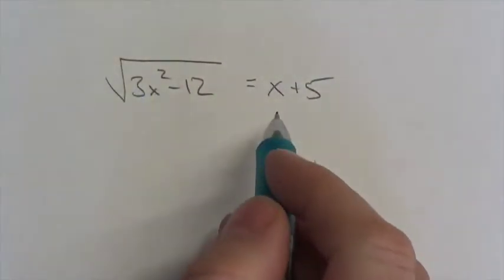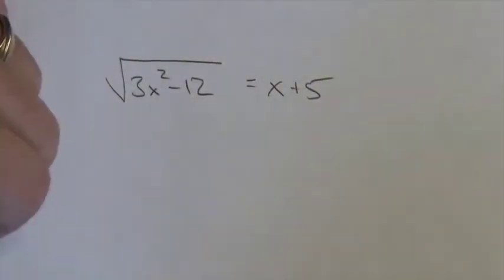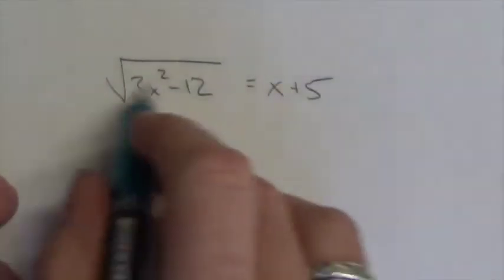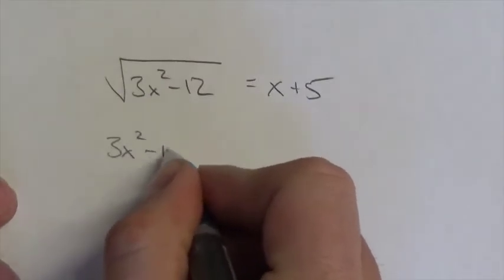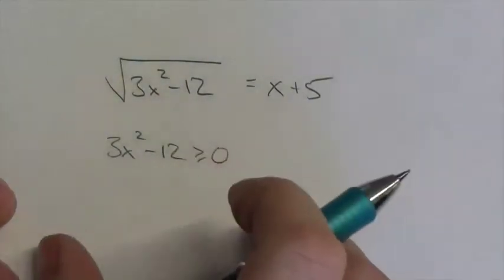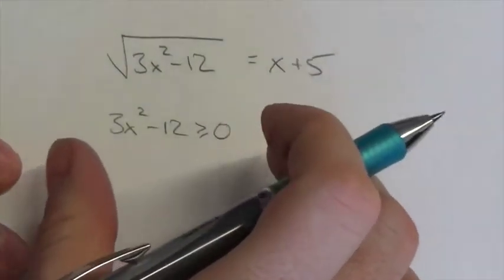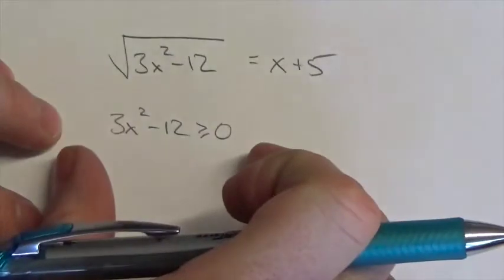Now this one's a little different than what we've done before because of the quadratic that's underneath the radical here. Okay, so the first restriction here is going to be that the radical there has got to be greater than or equal to zero. Now there's a couple of different ways that you could solve something like this, or to determine what the interval is that goes with this particular expression here.